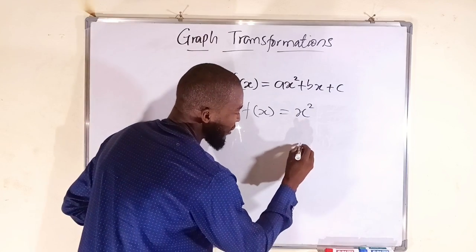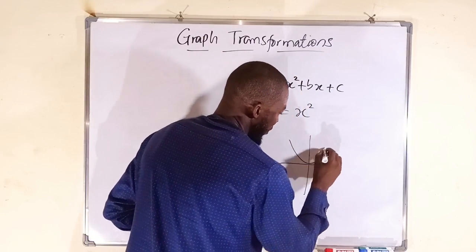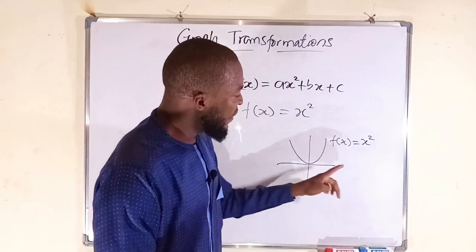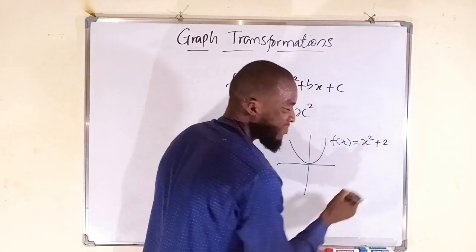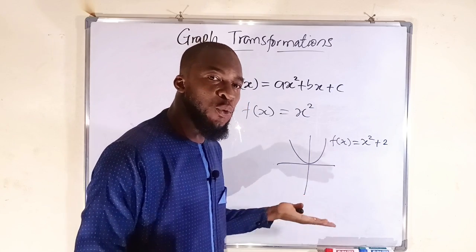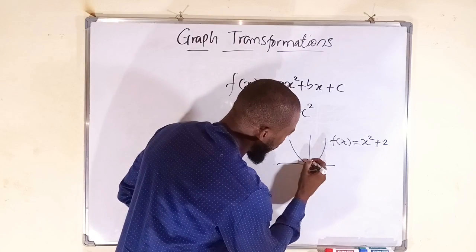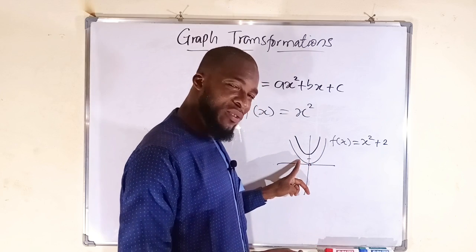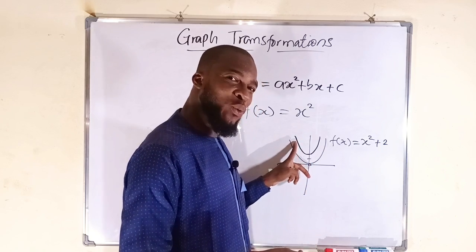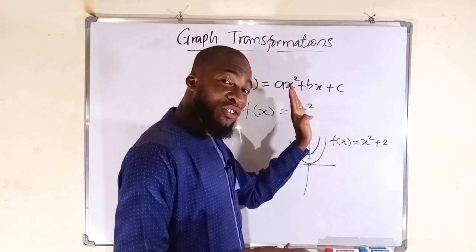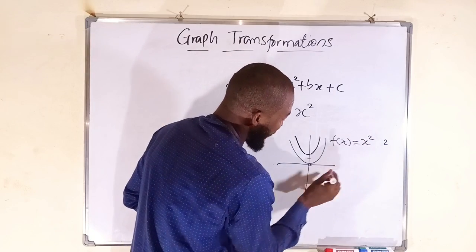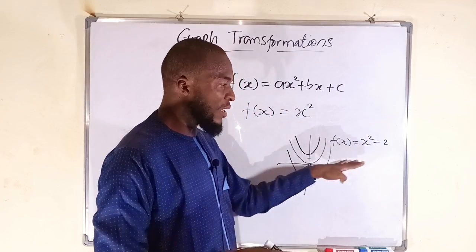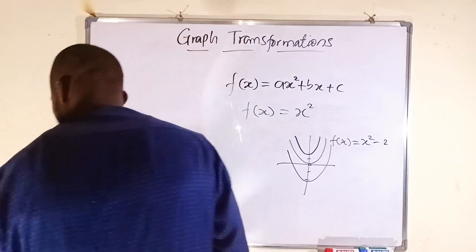Suppose we have the graph of f(x) = x². The moment you add a number — for example, 2 — this causes a vertical shift of 2 units up. If the original vertex is at 0, the new graph is shifted up by 2 units. This is a transformation from the mother function x² to x² + 2. If the constant is negative, say −1 or −2, the graph shifts downward.